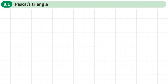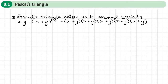This is the first section of chapter 8, the binomial expansion, and this is on Pascal's triangle. Pascal's triangle helps us to expand brackets where the power is more than cubed. For example, if I were to expand x plus y all to the power of 5, I'd have to write five sets of brackets out and manually multiply them. That's going to take a long time, and if I make a single mistake, the whole answer's going to be wrong.